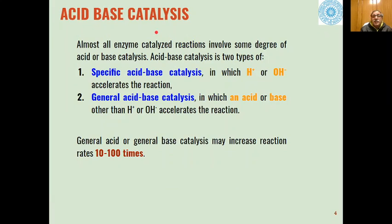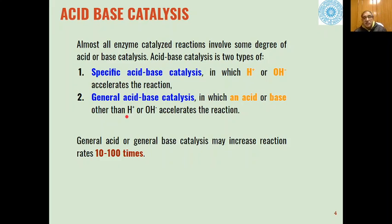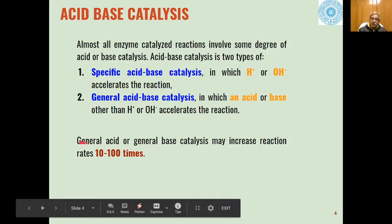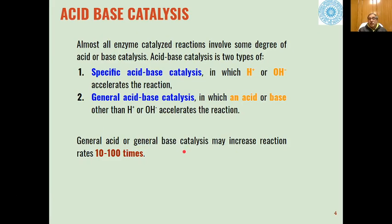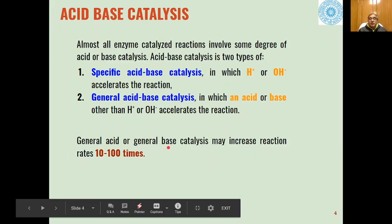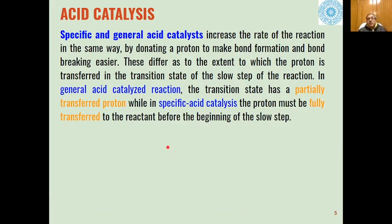Next is acid-base catalysis, which can be of two types: specific acid-base catalysis and general acid-base catalysis. In specific acid-base catalysis, only H⁺ or hydroxide ions accelerate the reaction. In general acid-base catalysis, any acid or base other than proton or hydroxide ion can accelerate the reaction. General acid or general base catalysts can increase the rate of reaction by a factor ranging from 10 to 100 times.